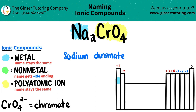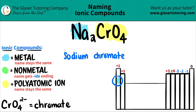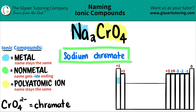So we have sodium chromate for now. Just double-check: do I need a Roman numeral in the middle? You only need Roman numerals if you have a transition metal — a metal that's in that block. However, we have sodium, so we don't need a Roman numeral. So we're done — Na2CrO4 is just sodium chromate.